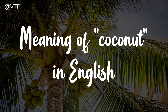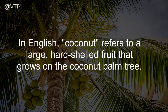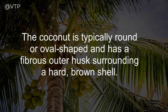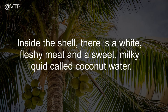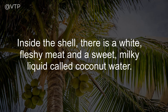The meaning of coconut in English. In English, coconut refers to a large, hard-shelled fruit that grows on the coconut palm tree. The coconut is typically round or oval-shaped and has a fibrous outer husk surrounding a hard, brown shell. Inside the shell, there is a white, fleshy meat and a sweet, milky liquid called coconut water.